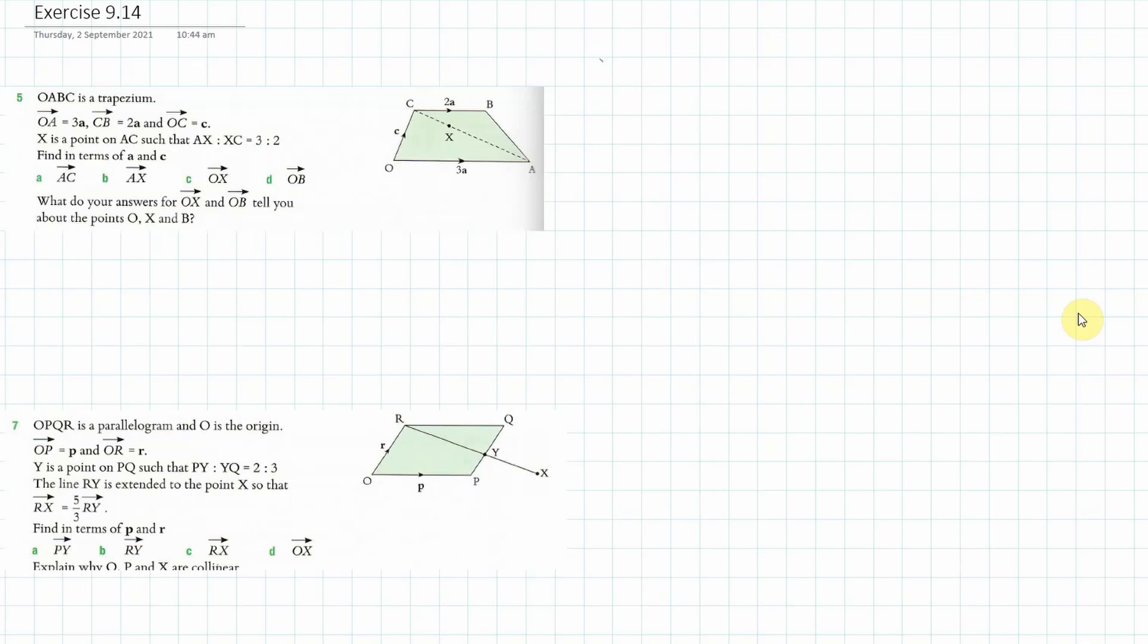Question A, we're going AC and I'm going to find that by going A to O plus O to C. And that looks to me to be minus 3A plus C, or I could write it more elegantly, C minus 3A.